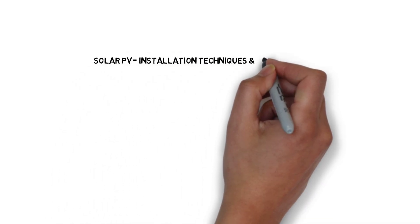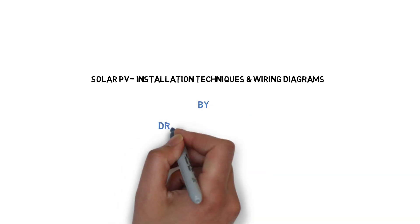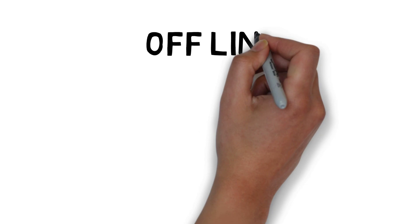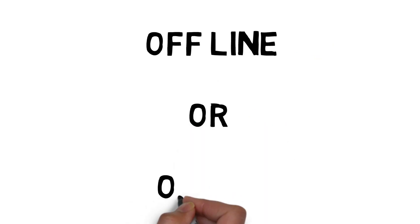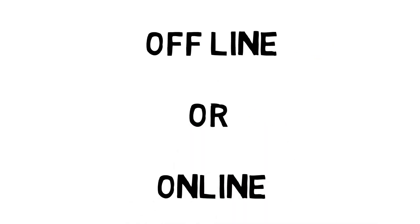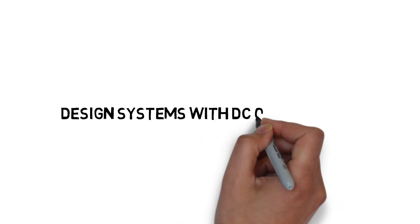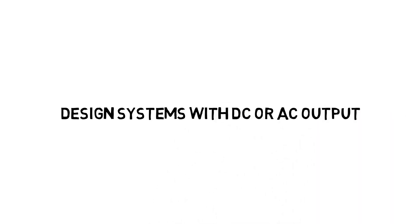Welcome to this lecture on solar PV accessories and schematics. Solar PV systems can be installed offline and online — that is, PV systems can be connected to the grid mains, or they can be installed where the grid is completely absent. Where there is no connection to grid electricity, solar PV systems can be used with both DC output or an AC output.